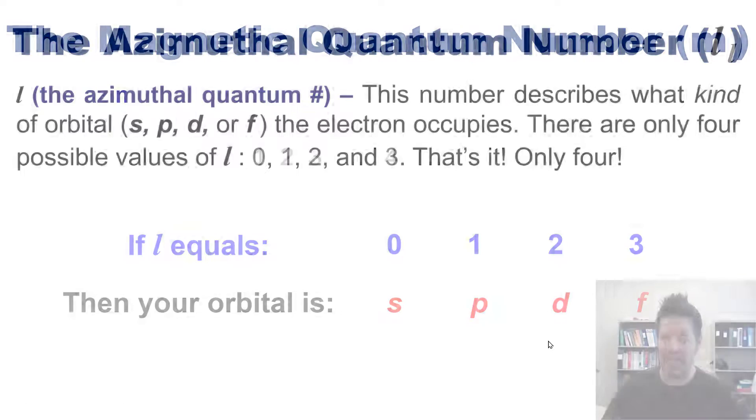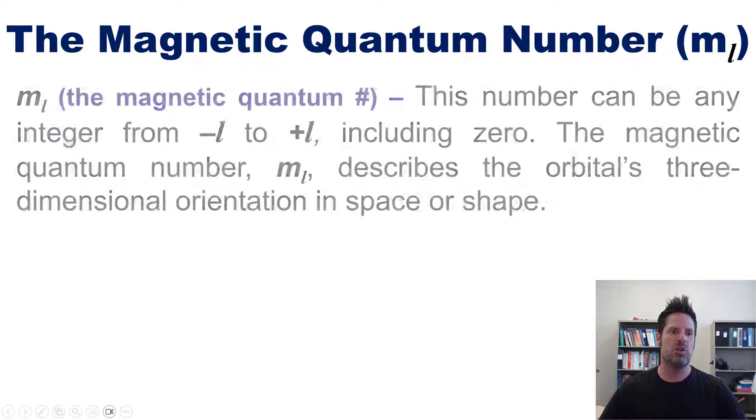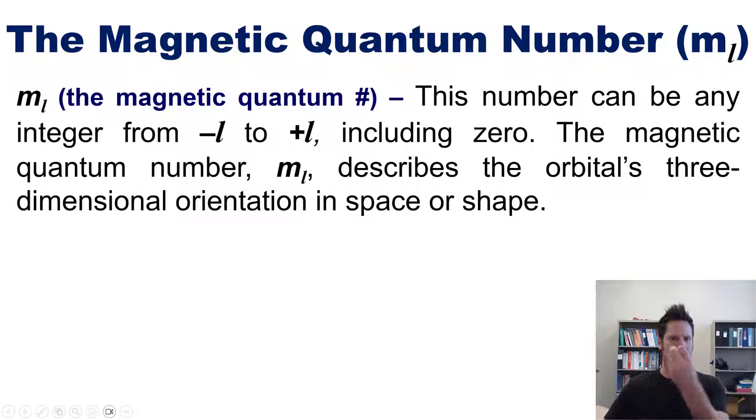Which takes us to the magnetic quantum number, m sub l. This quantum number, m sub l, can be any integer from minus l to plus l, including zero. The magnetic quantum number describes the orbital's three-dimensional orientation in space or its shape.